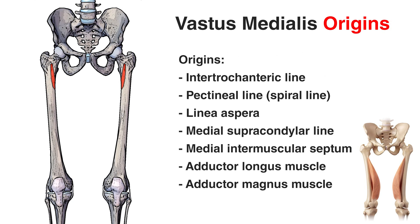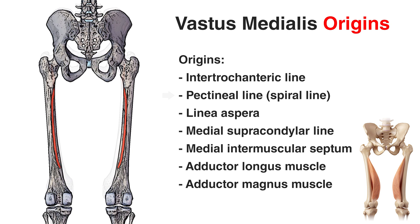Looking at the vastus medialis origins next, similar to the vastus lateralis, we start on the anterior femur and continue to the posterior. The first origin point is the inferior part of the intertrochanteric line — the ridge connecting the greater and lesser trochanter. It also originates from the pectineal line, also referred to as the spiral line. On the posterior view, the origin continues down the back of the femur along the medial part of the linea aspera — the side of the ridge closest to the body's midline.